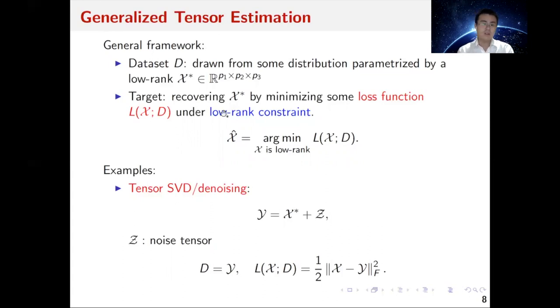Here is our framework. Suppose we observe a dataset D which is drawn from some distribution parameterized by the low-rank tensor X star. Our target is to recover this X star based on the data D. The method is to minimize some loss function L under some sort of low-rank constraint over X.